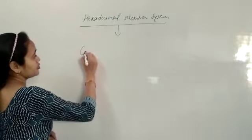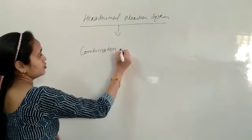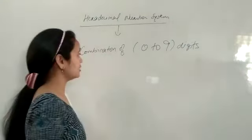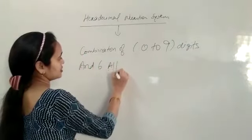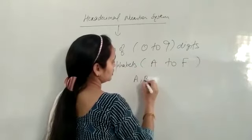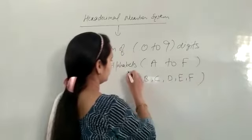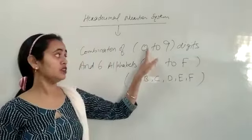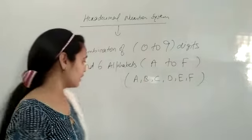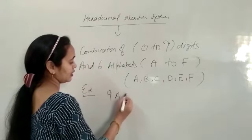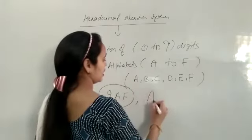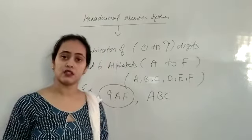The combination of 0 to 9 digits and 6 alphabets - 6 alphabets A to F means A, B, C, D, E and F. For example, if I take 9AF, that means this is the hexadecimal number system. If I take ABC, this is also the hexadecimal number system.